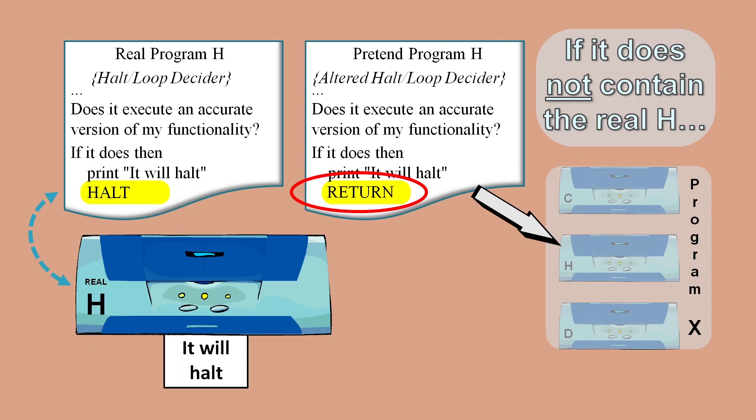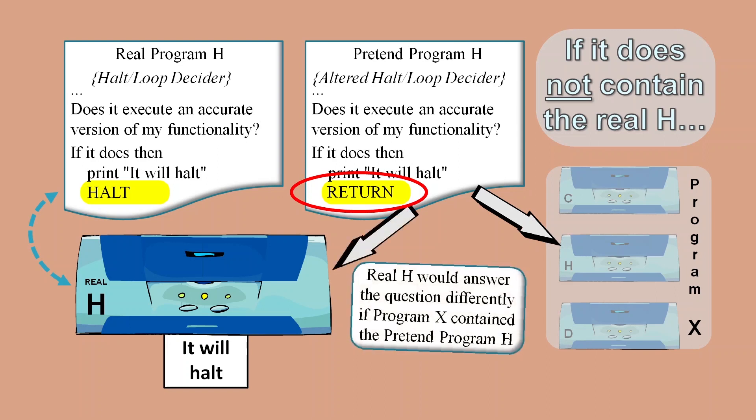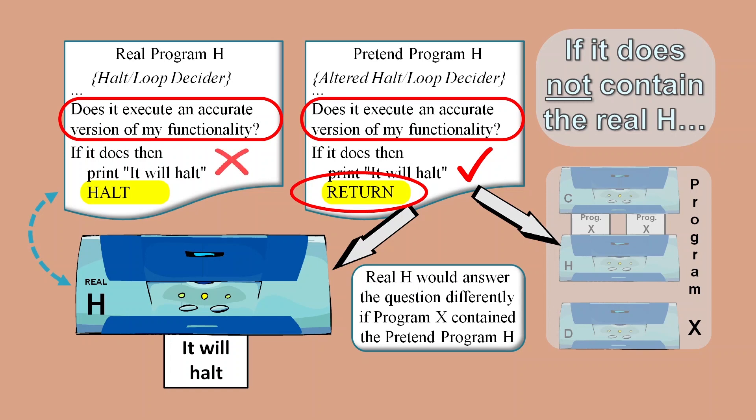But this seemingly minor alteration would in reality be a major deviation from the real functionality of real H because now it will respond completely differently to the question: does it execute a faithful reproduction of my functionality? So after the copier has sent its output to the pretend H functionality, the pretend H functionality will conclude that Program X does execute a faithful reproduction of its own functionality, whereas the logic in real Program H will conclude that Program X does not execute a faithful reproduction of its own functionality.